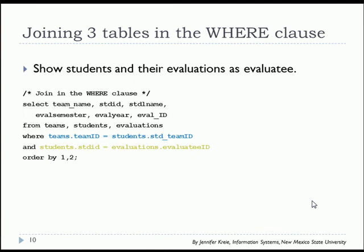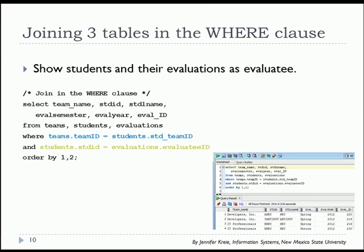We can repeat the same query but doing it with the where clause and we will get the same results. Instead of using join we do from just list the tables separated by commas where joining team to students and then joining students to evaluations. The order in which you join these in terms of - I could list students joined to evaluations before I list teams joined to students - that would not make a difference in the outcome.